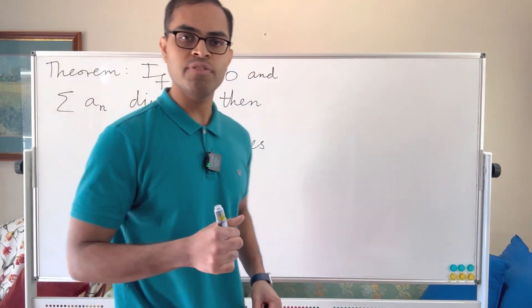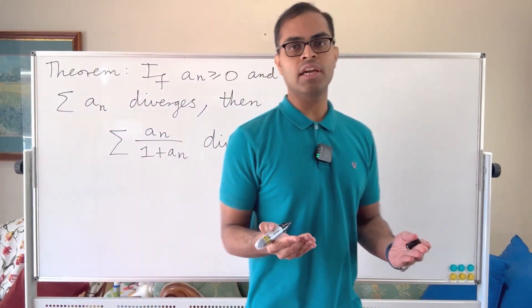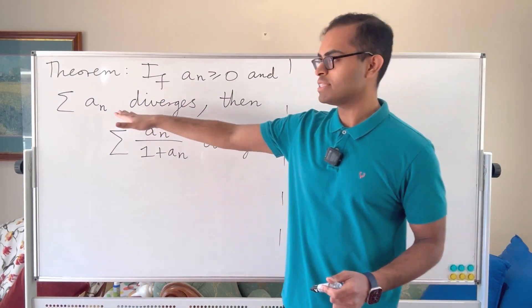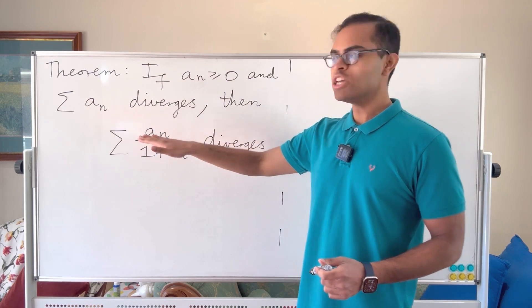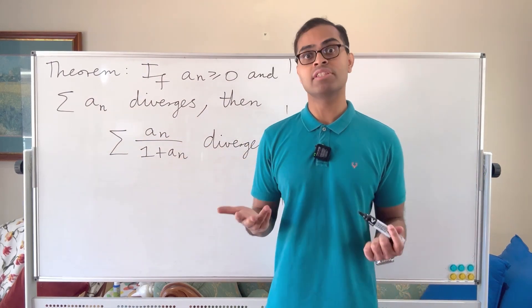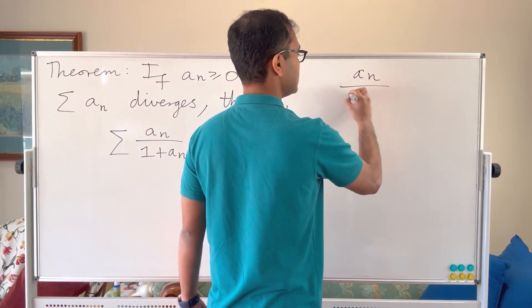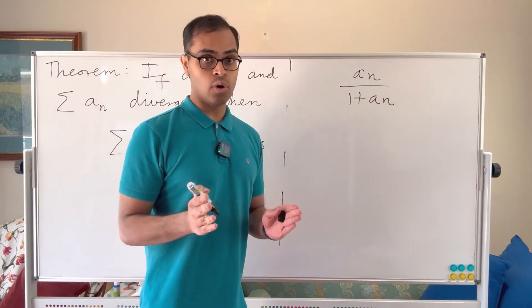I'll walk you through the intuition first before we get into writing the rigorous proof. The first step is to think about the information we're given: sum an diverges, and we're trying to use that information to show this sum diverges. So you want to look at the comparison test. In other words, if we can look at this series an over 1 plus an and somehow we can estimate it from below.